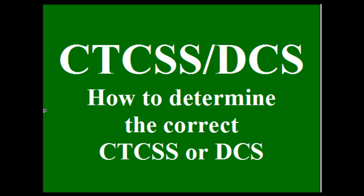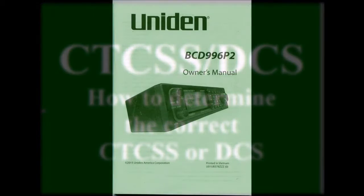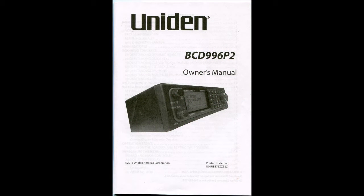Using CTCSS or DCS protection in your scanner is really a good thing because it keeps so much noise and confusion out of your scanning environment. But the question is how do you determine which is the correct tone or code for the frequency you're trying to monitor? The answer is the 996 P2 scanner has the capability of detecting unknown CTCSS or DCS signals and presenting the tone or code on the screen so you can utilize them.